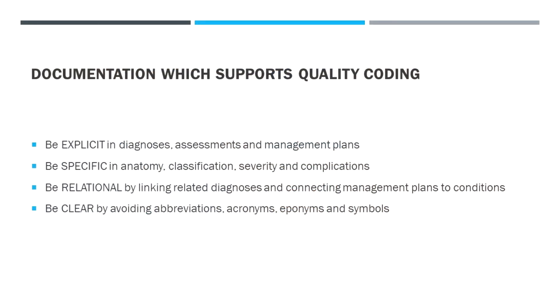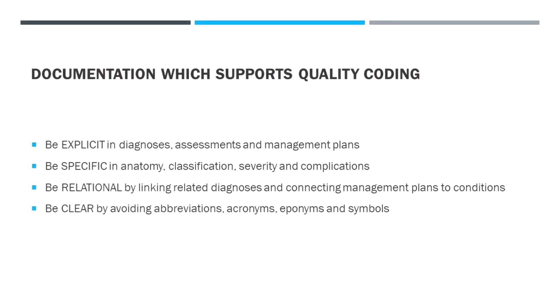Being relational means that often one condition will have multiple complications — pneumonia with type one respiratory failure, pneumonia with delirium, pneumonia with septic shock — those things all require high level interventions like vasopressors, dialysis, or non-invasive ventilation. So linking those things — going 'non-invasive ventilation for the type one respiratory failure due to pneumonia' — that relationship being really clear is the best way to capture complexity.